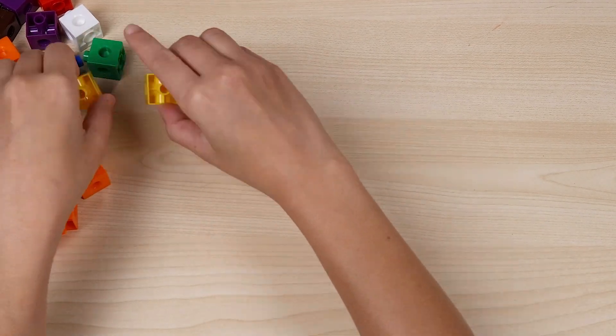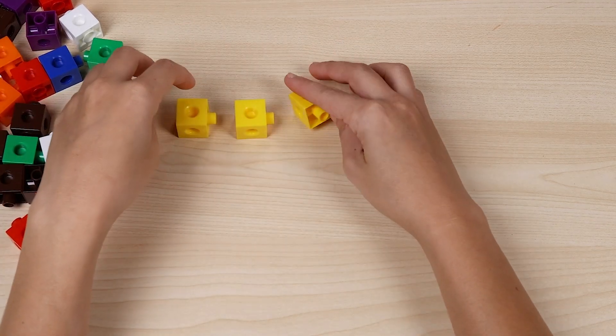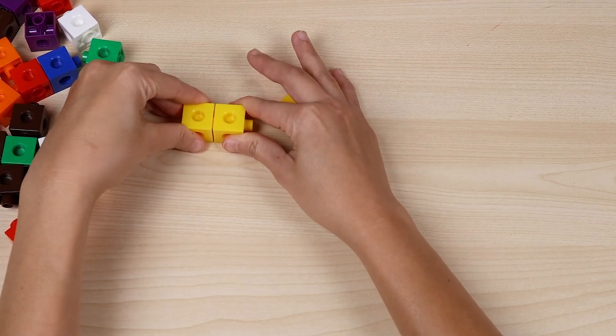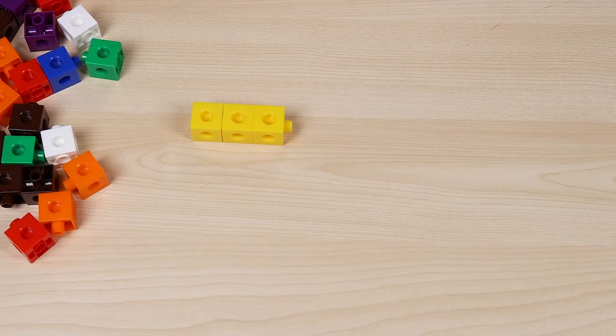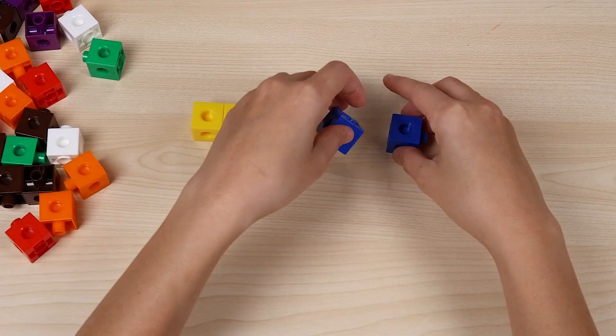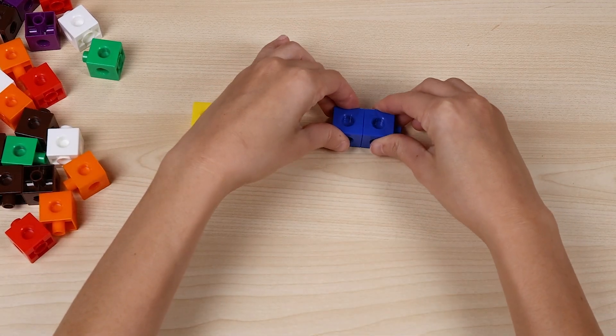Let's start with three yellow cubes. One, two, three. Now we're going to add two blue cubes. One, two.